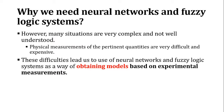However, the major problem of current situations or real-life situations is that the situations are very complex and not well understood. Physical measurements are not always possible and are pretty expensive, so that's why people use experimental-based ideas like neural networks or fuzzy logic systems.